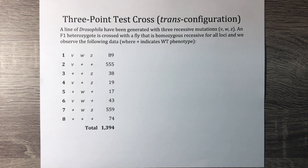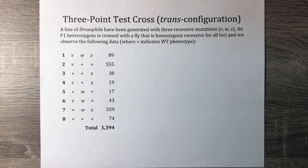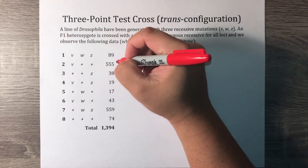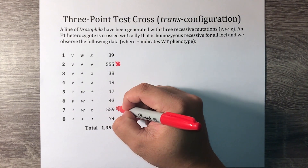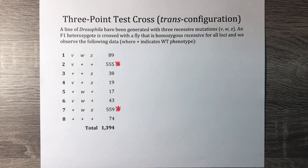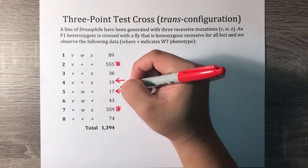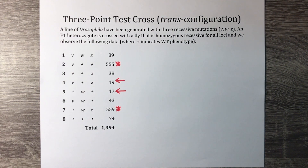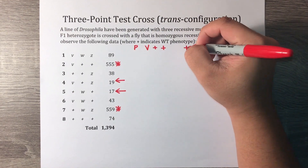In our second example, we'll be looking at trans configuration. A line of Drosophila has been generated with three recessive mutations: V, W, and Z. An F1 heterozygote is crossed with a fly that is homozygous recessive for all loci, and we observe the following data where a plus indicates a wild-type phenotype. Because the most numerous progeny have phenotypes that are neither exclusively wild-type nor exclusively mutant, we know the parental configuration was trans. The parental non-recombinant phenotypes are: recessive V, dominant W, dominant Z; and dominant V, recessive W, recessive Z. The double crossover phenotypes, which occur in the smallest numbers, are: recessive V, dominant W, recessive Z; and dominant V, recessive W, dominant Z.